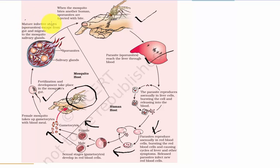The mature infective stages escape from the gut and migrate into the mosquito's salivary glands. This is happening in the mosquito where a fertilized mature cell of that sporozoa or plasmodium escapes the blood cell.